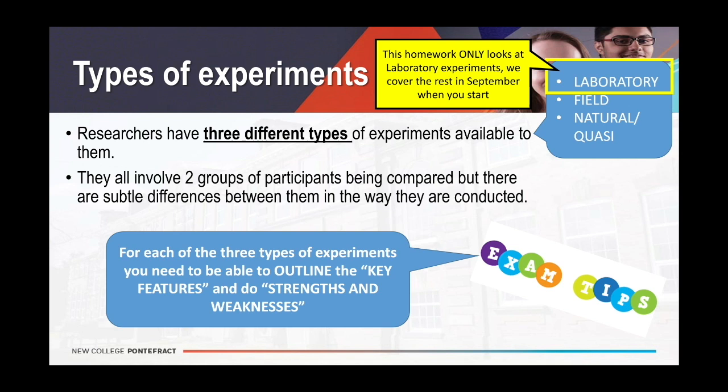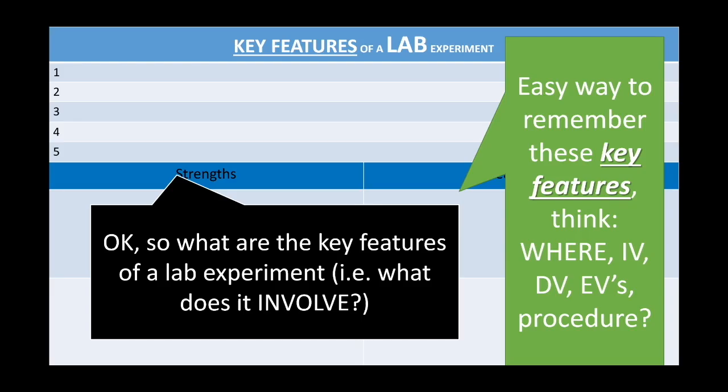For the different types of experiment, as a psychology student in your exam there are a number of things you've got to be able to do. Firstly, you've got to be able to outline the key features — basically what that particular type of experiment involves. Then you need to know the strengths and weaknesses: what is good about them and what is bad, giving advantages and disadvantages. So you've got to tell me what they involve and what the good and bad points are.